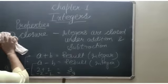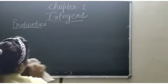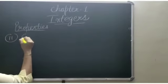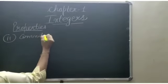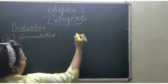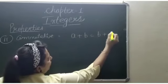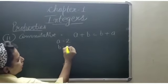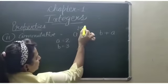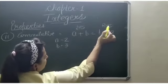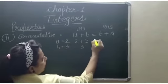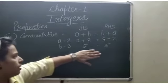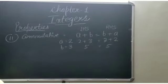Next property is commutative property, which is a very easy property. Commutative property states that A plus B is equal to B plus A. Where A is equal to 2 and B is equal to 3: on the left hand side, 2 plus 3 which is equal to 5, and correspondingly 3 plus 2 which is equal to 5. You will see in both cases the result is 5, so A plus B is equal to B plus A.